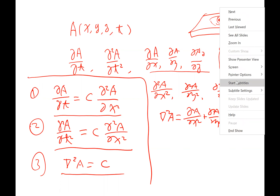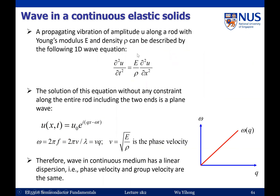Coming back to the 1D rod vibration problem: the vibration amplitude u is a function of x and t. The wave equation is: the second-order derivative of u with respect to time equals (E/ρ) times the second-order derivative of u with respect to x, where E is Young's modulus (defining material stiffness) and ρ is the mass density. This is clearly a wave equation, meaning we have a lattice vibration wave inside this rod.